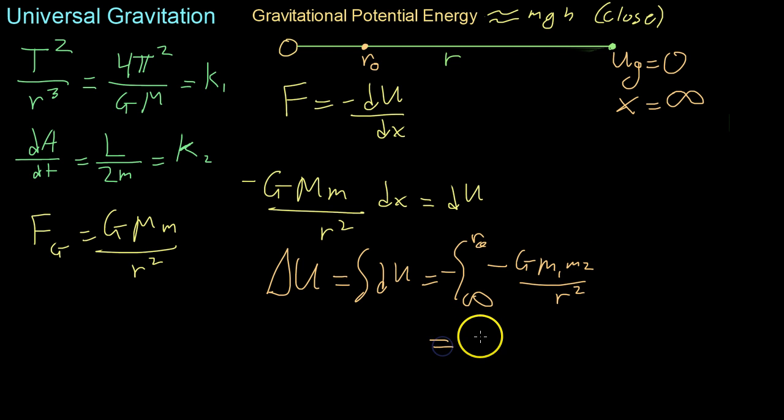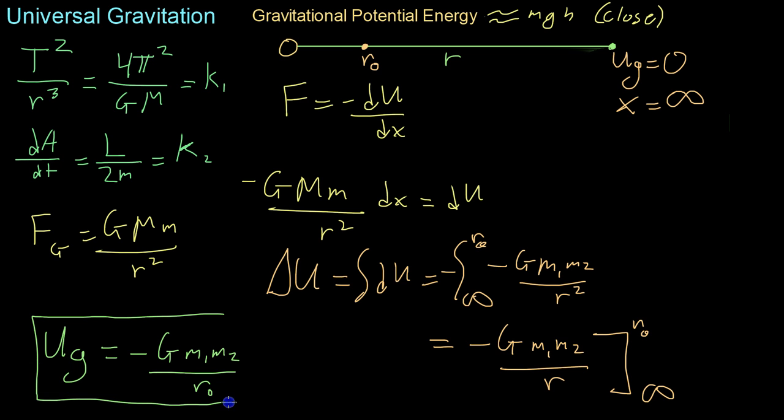we integrate from infinity to r naught of negative G M1 M2 over r squared. Now, integrating that, you get that negative, because these two negatives come out, you get negative M1 M2 over just the singular r through the integration from r naught to infinity. Or, that the gravitational potential energy at r naught equals negative G M1 M2 over r naught.